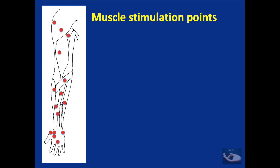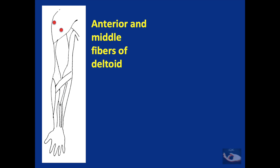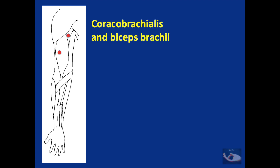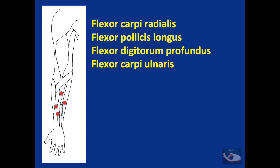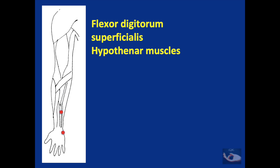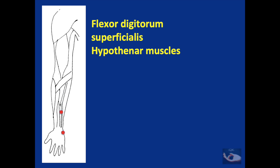The electrical muscle stimulation is given at different points for different muscles. These diagrams show the stimulation points for the anterior and middle fibers of the deltoid, the coracobrachialis and biceps brachii, the pronator teres, brachioradialis, and the middle and distal part of the forearm — including the flexor carpi radialis, flexor pollicis longus, flexor digitorum profundus, flexor carpi ulnaris, flexor digitorum superficialis, hypothenar muscles, and the thenar muscles consisting of the abductor pollicis brevis, opponens pollicis, flexor pollicis brevis, and the lumbrical muscles.